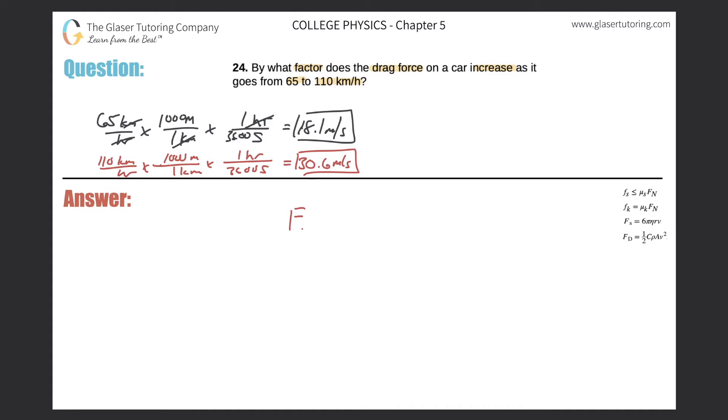So f sub d is equal to 1 half the coefficient of drag times the density times the surface area of the object facing that fluid times the velocity squared. So let's just assume all of this is constant for these two cases.